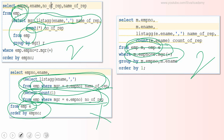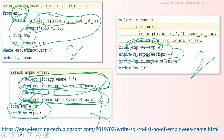I would always suggest writing multiple queries for the same problem. Try getting the explain plan, understand how it generates the plan internally, check the cost and underlying parameters, and then pick the optimized query.